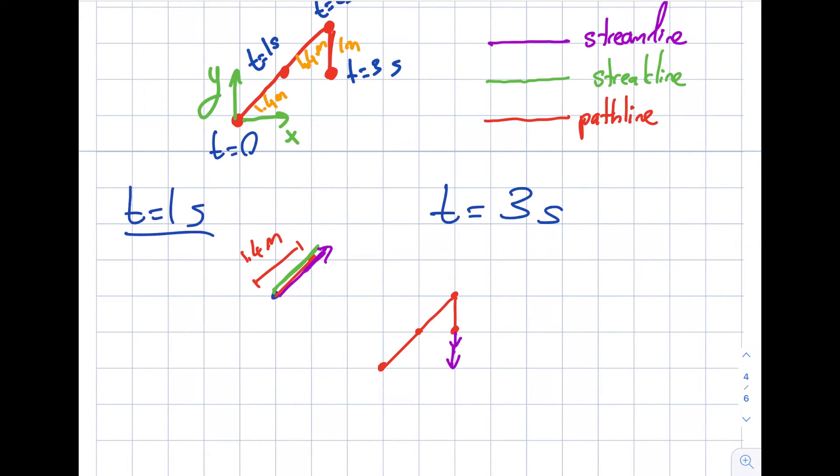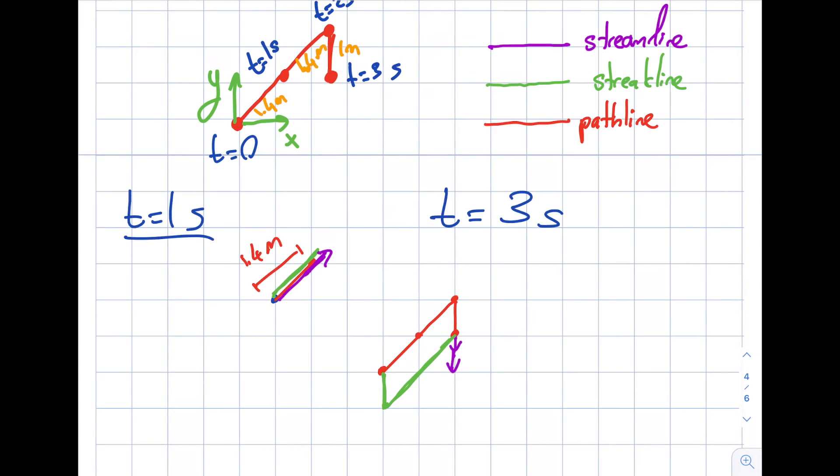Streak lines are interesting because remember, this is a succession of marked particles that originated from a particular point in the flow. If I'm interested in drawing it, here's what it's going to look. I'm drawing the succession of particles, so it's going to look like this. That will be the succession of the particles that originated from the same point.